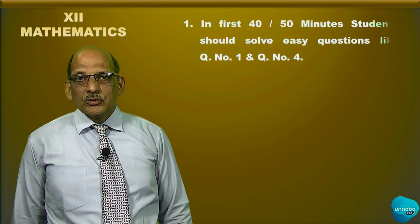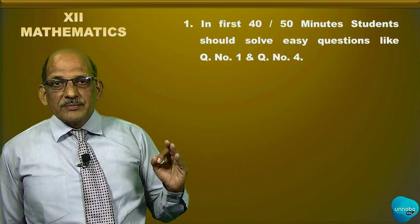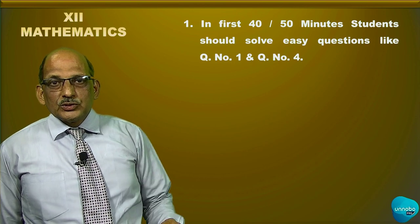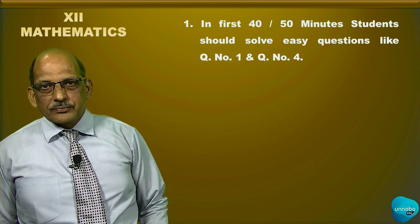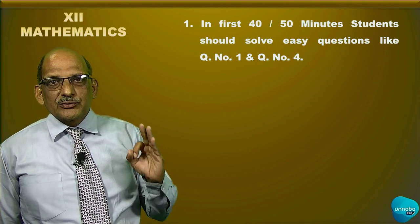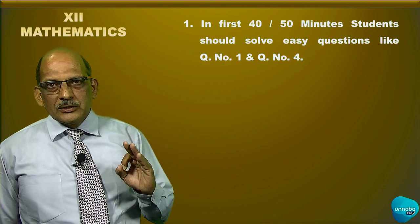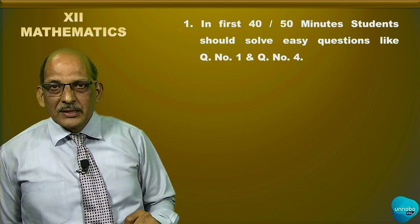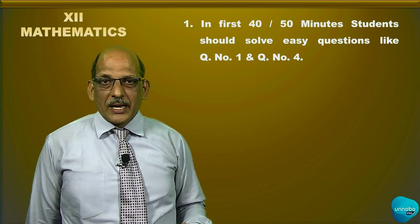As a time strategy, in the first 40-50 minutes students should concentrate on question number one and question number four. These are the two easiest questions in the whole question paper — question number one is easy in section one and question number four is easy in section two.